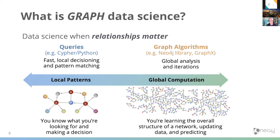On the right-hand side we have the global computation approach, where we're interested in looking at the whole graph — considering all the data. The results from this approach are probably not going to be real-time queries since we're querying all the data, and bigger graphs take longer. But here we can do different types of things: find out which are the most important nodes, how nodes are clustered together, what's the fastest way between two nodes — more complicated computation like that.